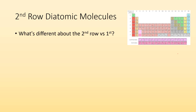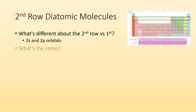So second row diatomic molecules — what's different about the second row versus the first? Well, in that second row, the 2s and the 2p orbitals are a thing. Instead of just 1s, we also have 2s, but more significantly, the p orbitals are a thing.